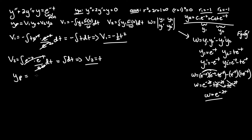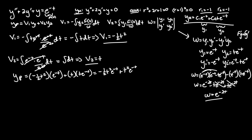Finally, for our y_particular = v₁y₁ + v₂y₂: substituting in, that's −½t²·e^(-t) + t·te^(-t), which gives −½t²e^(-t) + t²e^(-t). There is a little simplification here: one t²e^(-t) minus half of itself leaves half of itself, so y_particular = ½t²e^(-t). And that is our particular solution.